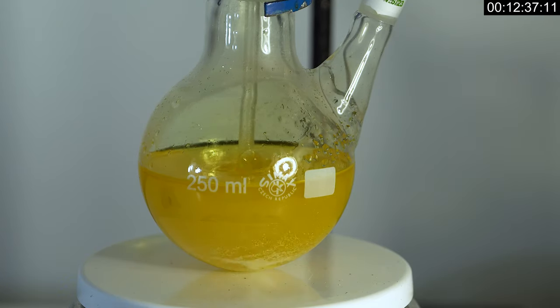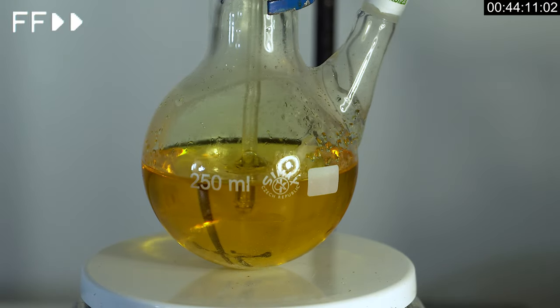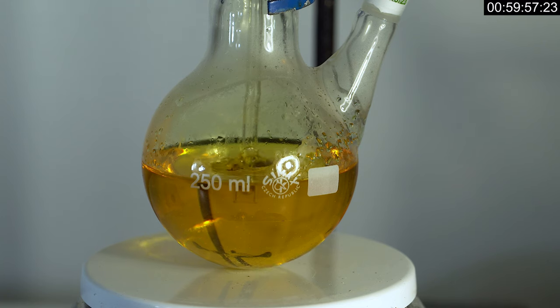In about an hour, all of the lead dichloride dissolves in hydrochloric acid, and we get a light brown solution of chloroplumbic acid.